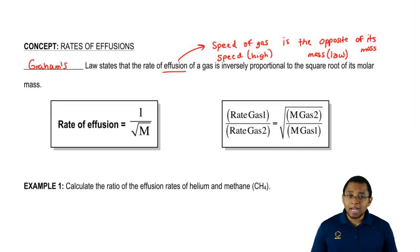Effusion looks and compares multiple gases to each other. Gas A moves faster than gas B. Why is that? Gas A must weigh less. That's why it's moving faster.